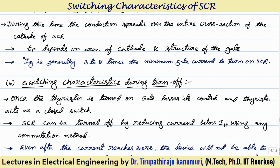The turn-on time mainly depends on gate current magnitude and applied voltage magnitude. In practice, the value of Ig is taken as 3 to 5 times the minimum gate current required to turn on the SCR.